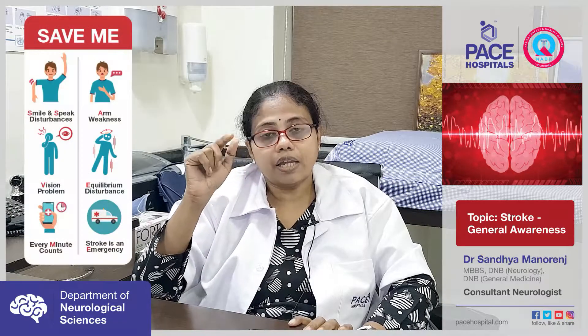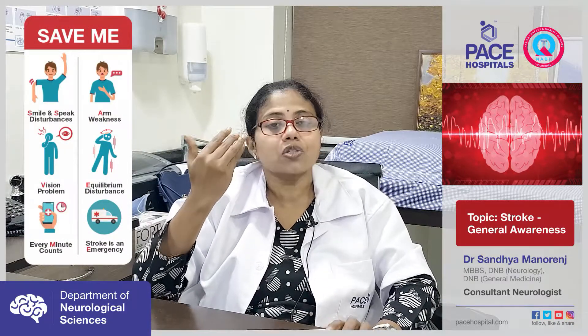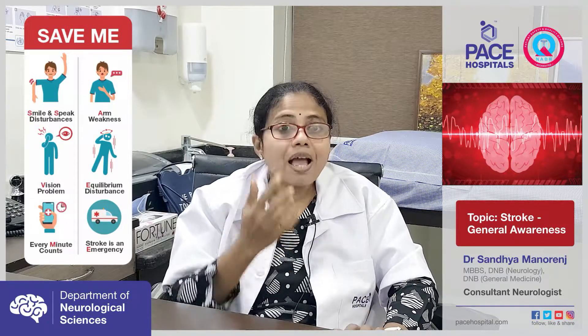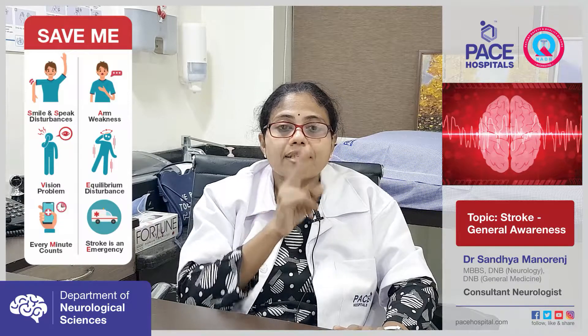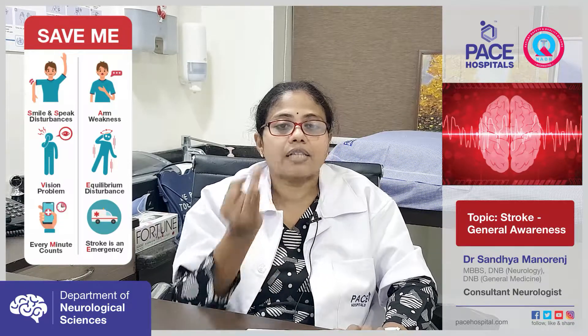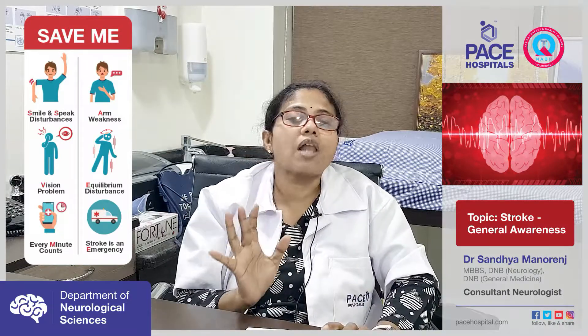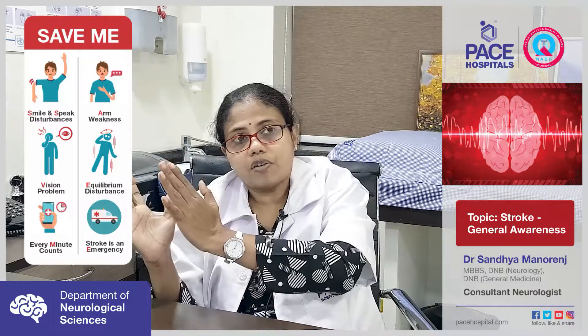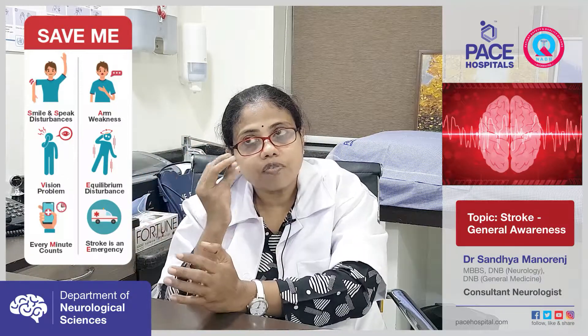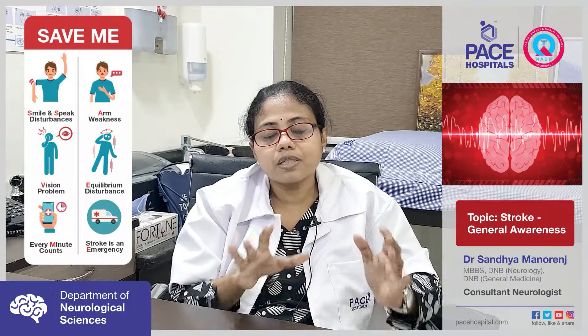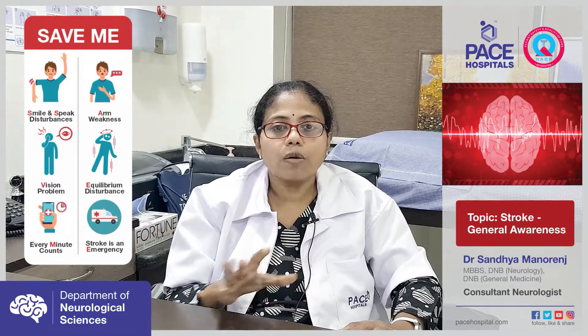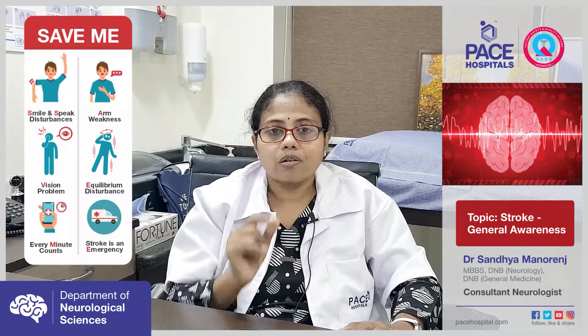The Indian Academy of Neurology and Stroke Subsection has given a new logo: SAVE ME. S is for speech difficulty or smiling difficulty. A is for arm weakness — upper or lower limb weakness. V is for visual abnormalities — the person cannot see one half of the visual field or has sudden loss of vision due to decreased blood supply to the retina. E is for equilibrium disturbance — the person is unable to walk properly. SAVE is the new logo to recognize stroke at home.